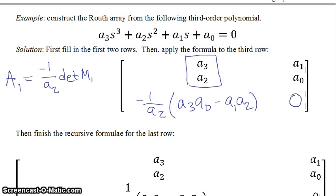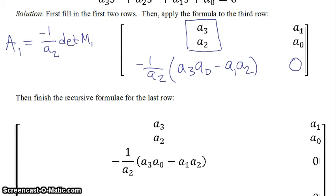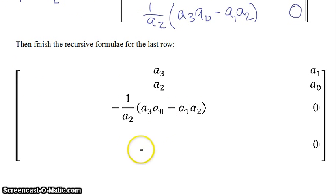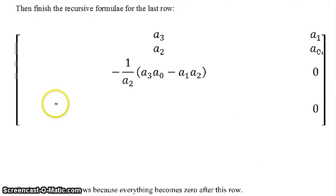And so that's my third row, and now we have to make a fourth row. So we have to finish this recursive formula for the last row. And so to do that, what we have is we have our B1, remember, is going to be minus 1 over A1 times the determinant of its matrix.